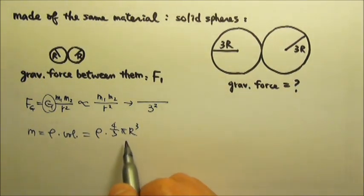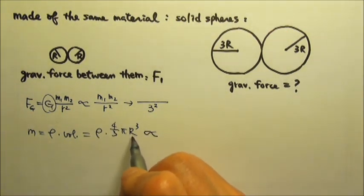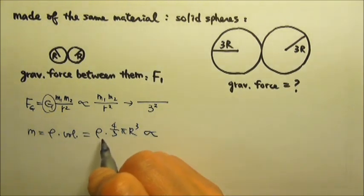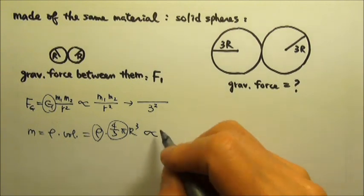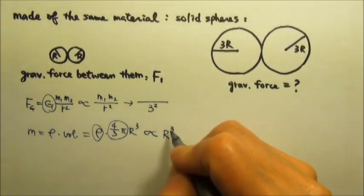Since we only care about the proportion, if you happen to not remember the equation, as long as you know the volume is proportional to R cubed, then we know the density is the same. These are constants. This is just proportional to R cubed.